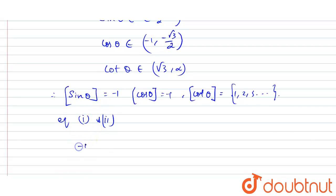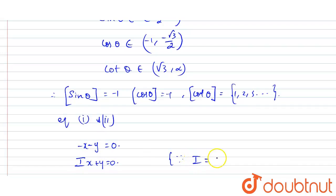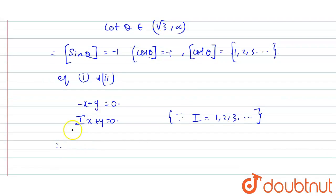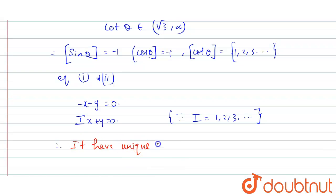Substituting into equations 1 and 2: Equation 1 becomes -x - y = 0, and Equation 2 becomes i·x + y = 0 where i = 1, 2, 3, and so on. From this condition, the system has a unique solution: x = 0 and y = 0.